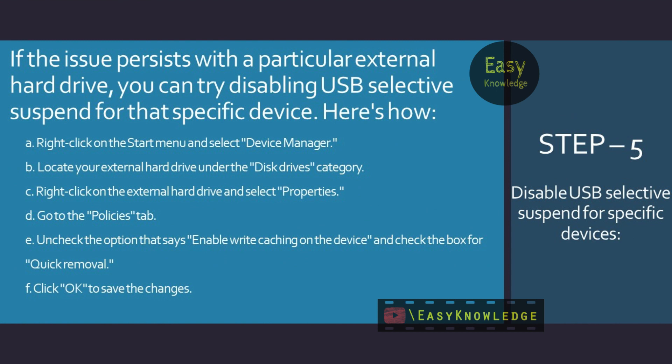Step 5: Disable USB Selective Suspend for Specific Devices. If the issue persists with a particular external hard drive, you can try disabling USB Selective Suspend for that specific device. Right-click on the Start menu and select Device Manager. Locate your external hard drive under the Disk Drives category. Right-click on the external hard drive and select Properties. Go to the Policies tab. Uncheck the option that says 'Enable Write Caching on the device' and check the box for Quick Removal. Click OK to save the changes.